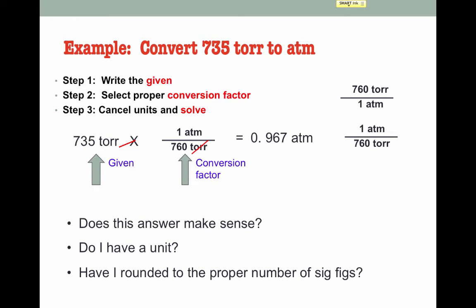Does this answer make sense? Well, if 760 Torr is 1 ATM, then 735 Torr should be slightly less than 1 ATM — so yes, that makes sense. Do I have a unit? Yes. Have I rounded to the proper number of sig figs? This number has 3 sig figs, and because the conversion values are defined quantities with infinite sig figs, our answer should also have 3 sig figs. Excellent.